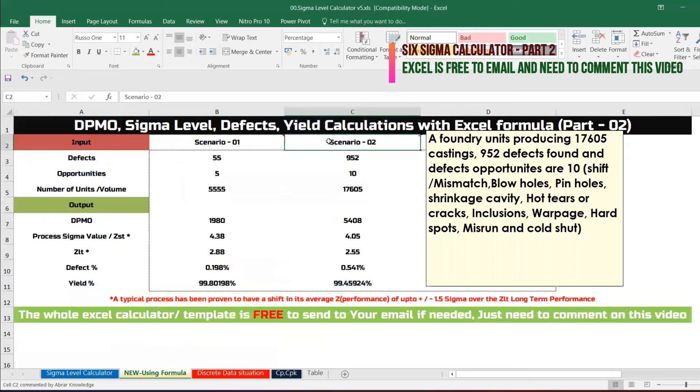Let's discuss scenario number two: your foundry unit producing 17,605 units and casting 952 defects found. Defects opportunities are 10: shift mismatch, blowholes, pinholes, shrinkage cavity, hot tears, cracks, inclusions, warpage, hot spot, misrun, cold shut.